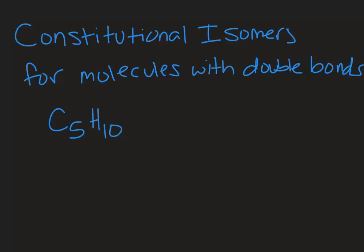Welcome to Chemistry with Caroline. In this video we're going to take a look at constitutional isomers for molecules that contain double bonds. So we've got a molecular formula here, C5H10.